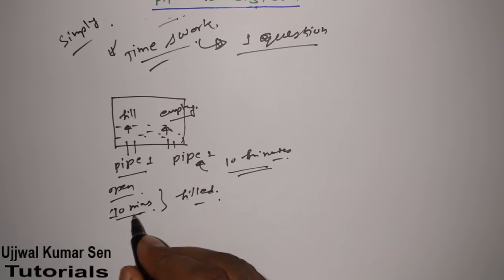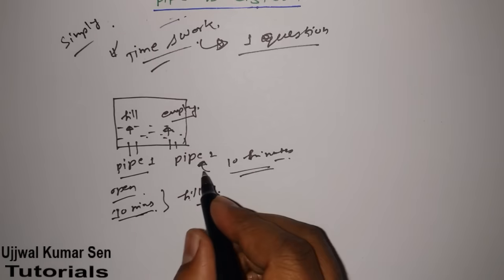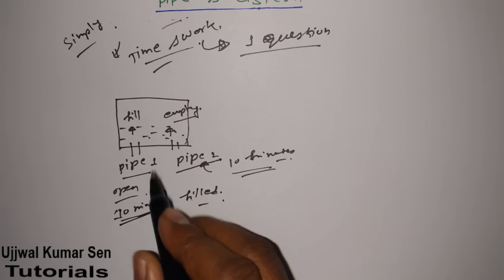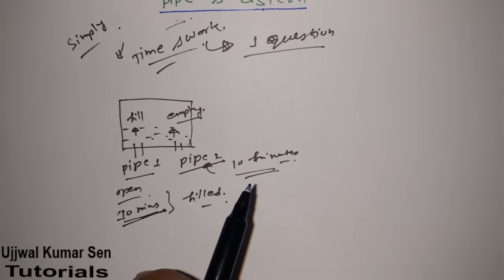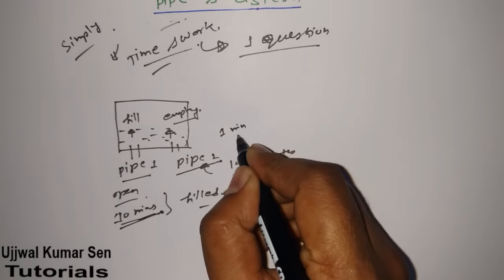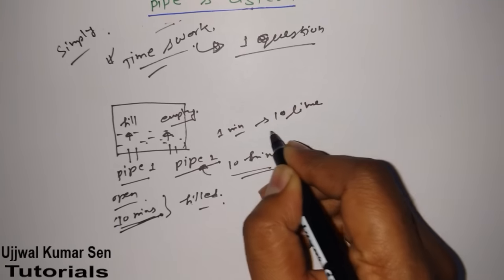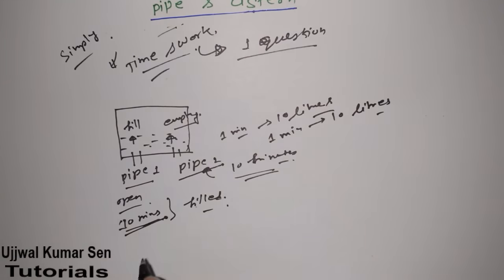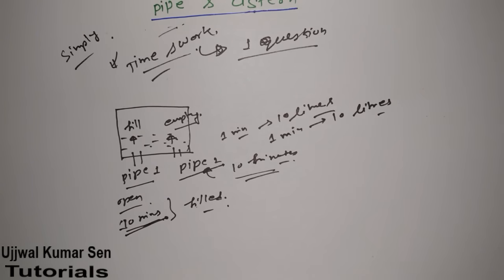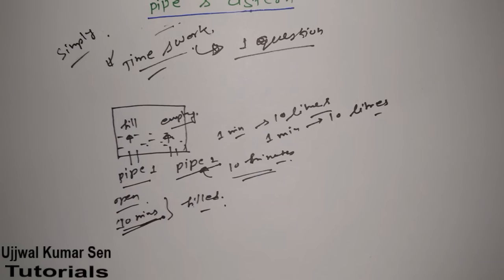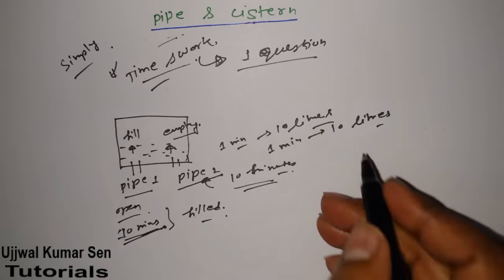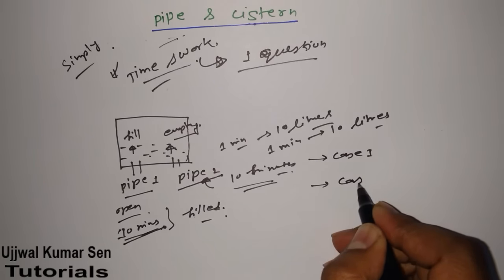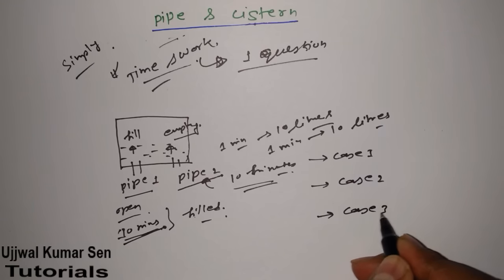In this case, filling the tank is not possible because the time to fill and the time to empty the tank are the same. In one minute it fills 10 liters, and in one minute it empties 10 liters — so the tank will never be filled if both pipes are open. This type of problem you may get in the examination. I'm going to share three types of cases: case one, case two, and case three.